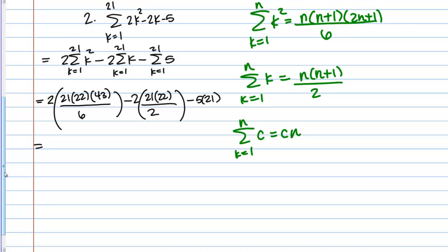Now we need to calculate these values. If you plug the first one into your calculator, you should get 6,622. The second term — the 2's cancel out so it's 21 times 22 — gives 462. Then minus 5 times 21, which is 105. If you put this all into your calculator as your final answer, you should get 6,055.